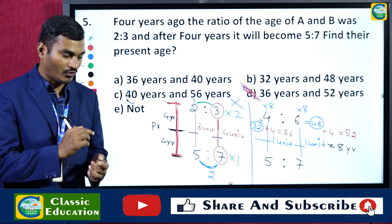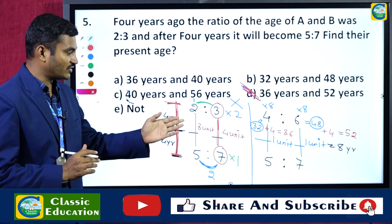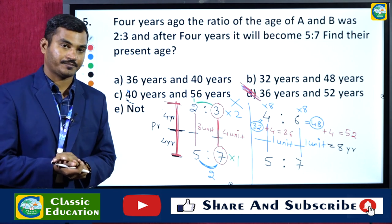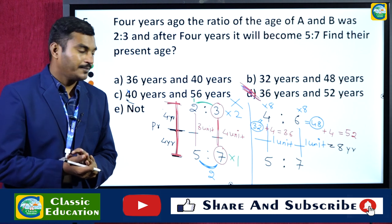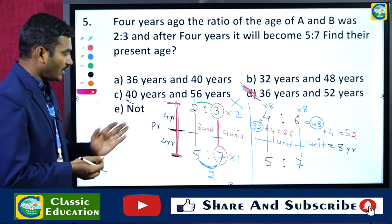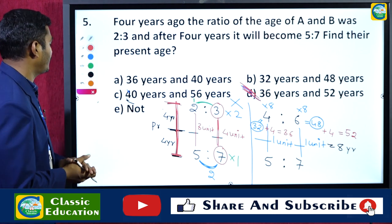Multiplying 8 by the past ratio values: 8 × 4 = 32 and 8 × 6 = 48 — these are ages 4 years ago. Adding 4 years to each: A's present age = 48 + 4 = 52 and B's present age = 32 + 4 = 36. So 36 and 52 are the present ages. Looking at the options, the answer is option D. I hope you all have understood the concepts.